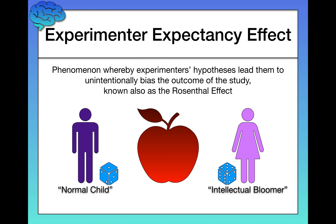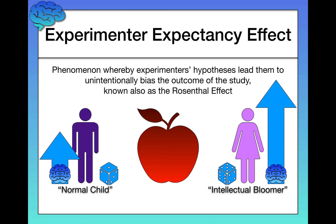At the end of the year, the children labeled as normal showed an expected improvement in intelligence — not surprising after a full year of school. But the children labeled as intellectual bloomers showed a massive increase in their intelligence over the course of the year. This means teachers unintentionally treated the intellectual bloomers in ways that promoted more growth, simply because they believed those children were expected to bloom.